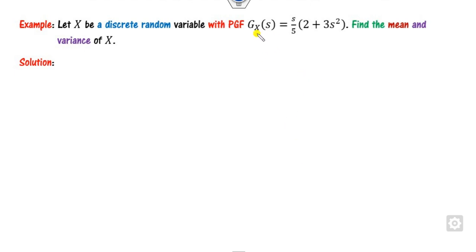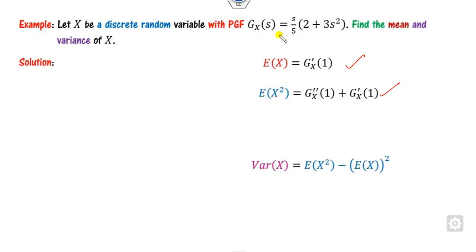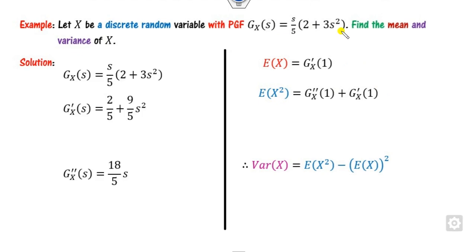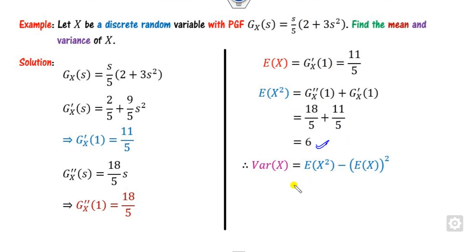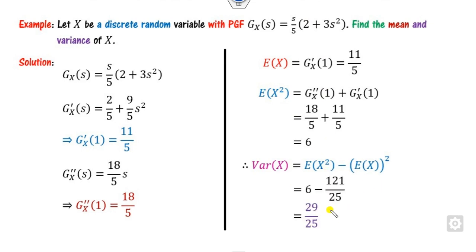For a given probability generating function, the task is similar: take the first and second derivatives. At S=1, compute these values — you get 11/5 and 18/5. Substitute into the variance formula and after calculation you get the required answer.